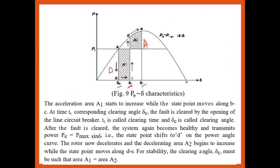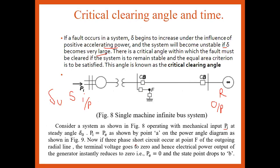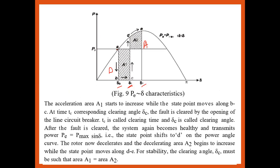With the fault on the system at the point where it occurs on the radial system, the terminal voltage goes to zero, hence the electrical power output also goes to zero. So Pe equals zero. At the initial condition, the system is running such that power equals Pi or Pm at delta-zero — that is from A to B. With fault on, power equals zero. At a particular value of delta — that is delta-c — the fault is cleared.